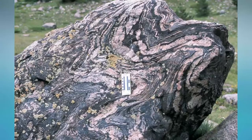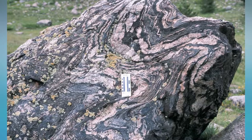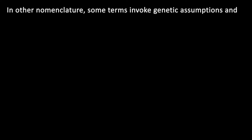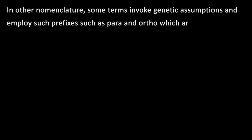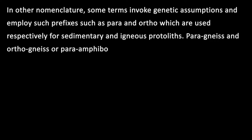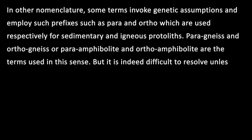In the two examples in the preceding discussion, the first rock indicates a parent of basic composition while the second indicates a pelitic parent. These criteria are the basis of field and laboratory studies of metamorphic rocks. In other nomenclature, some terms invoke genetic assumptions and employ prefixes such as para and ortho, which are used respectively for sedimentary and igneous protolith — paraschist, orthoschist, paraamphibolite, orthoamphibolite. But it is indeed difficult to resolve unless more intensive geochemical studies are undertaken.